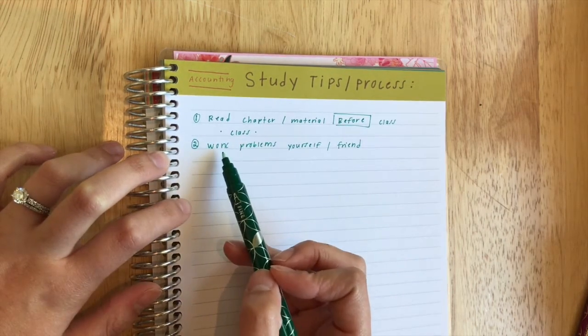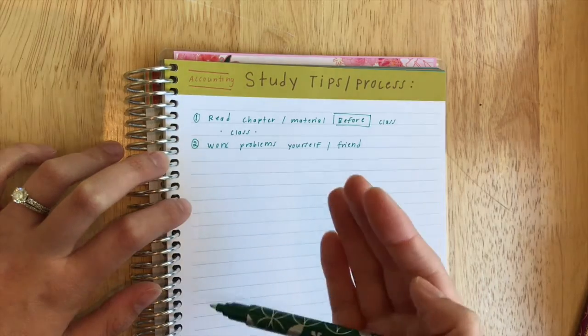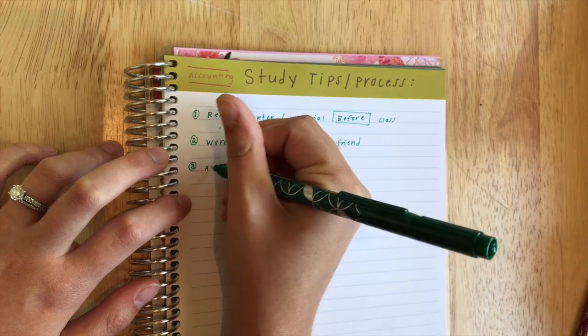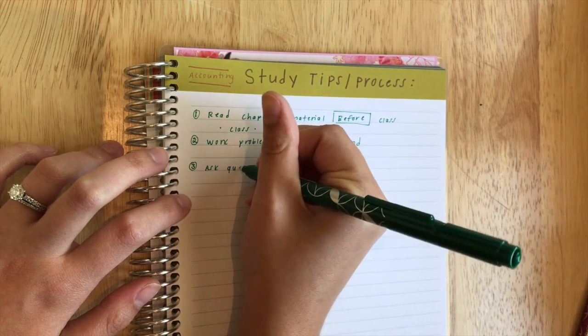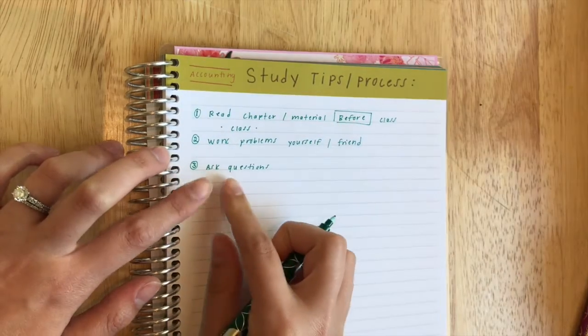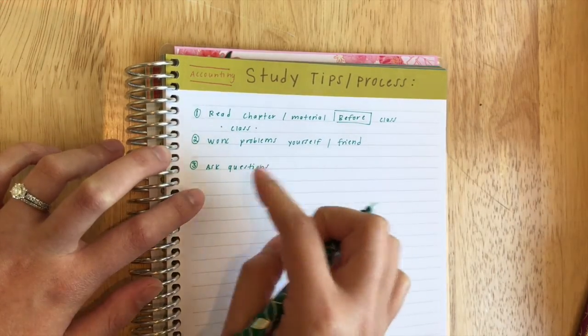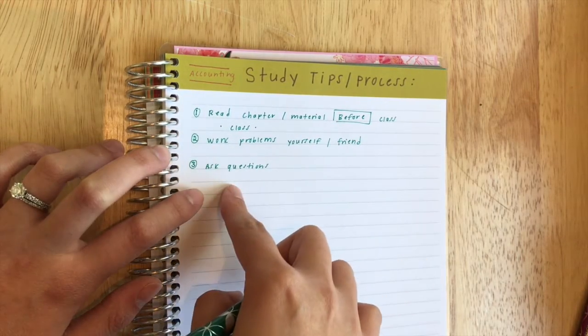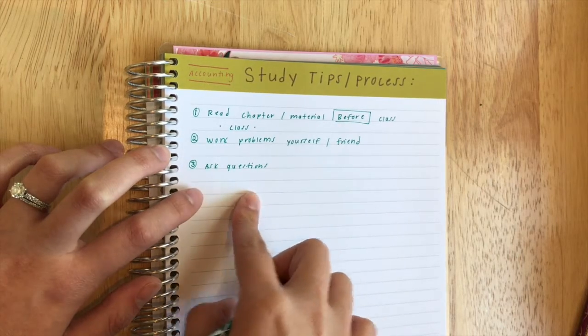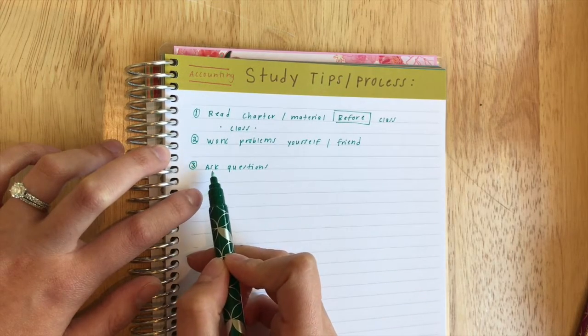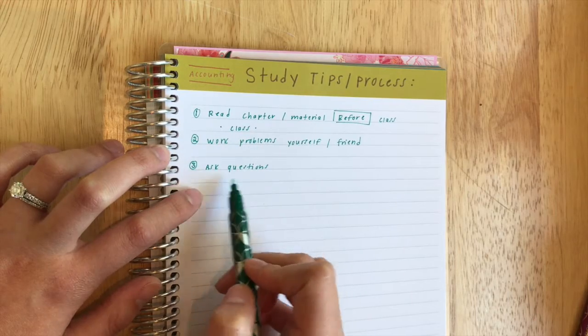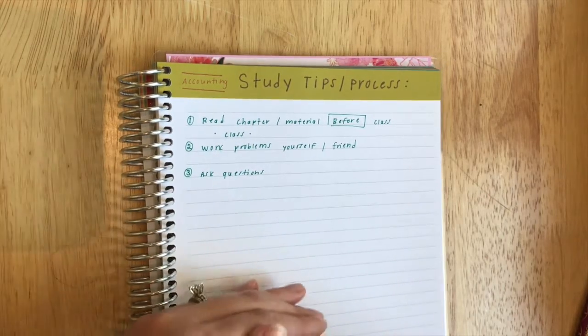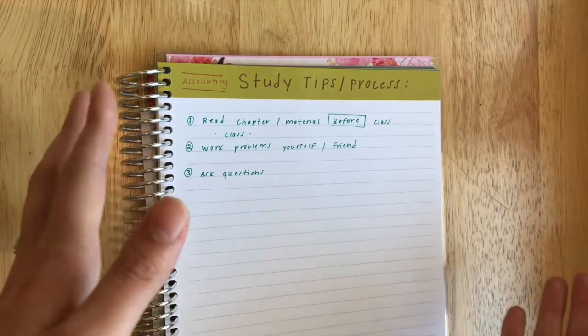Once you work the problems, there might be a few that you are not sure about, a few concepts that you're not too sure about, and that brings me to: ask questions. This is a huge point because you don't want to be going through class without knowing something. If something confuses you, you should definitely ask. Working the problems helps you realize what you're not sure about, because in accounting usually one thing builds off the other, so if you miss one part you could completely screw up a whole test question or homework question.